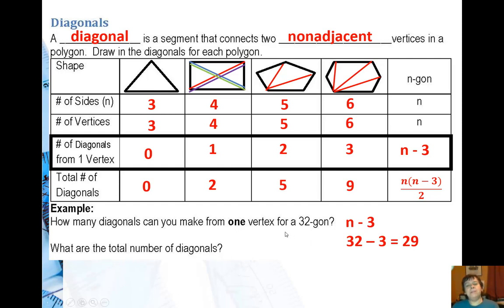Now let's find the total number of diagonals. Well it's going to be thirty-two, the number of vertices, times that twenty-nine, and then I have to divide by two for double counting. So I get four hundred and sixty-four diagonals in a thirty-two gon.